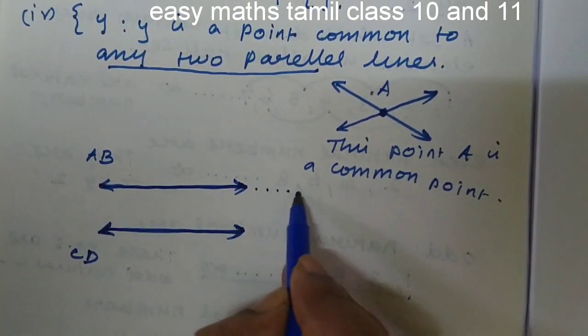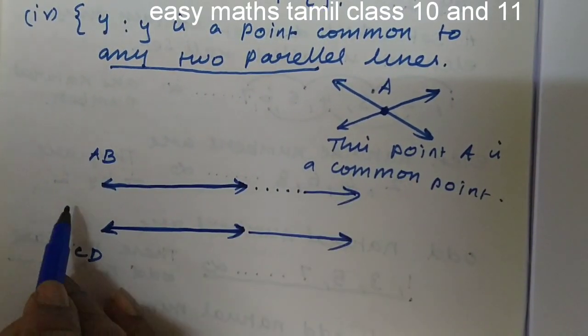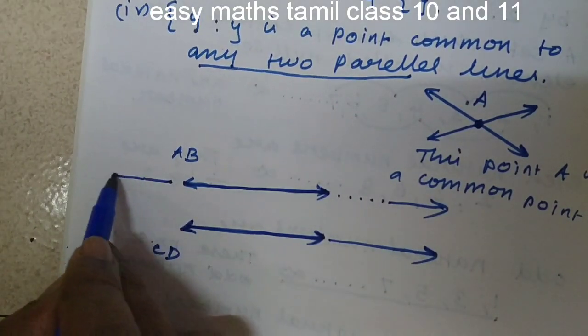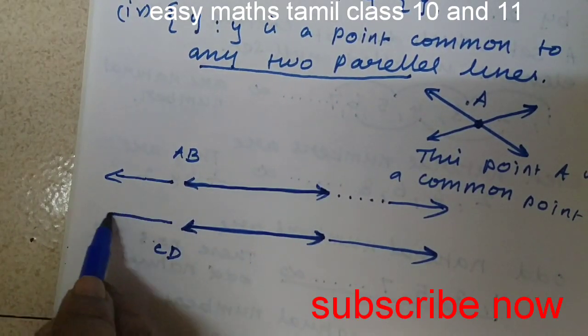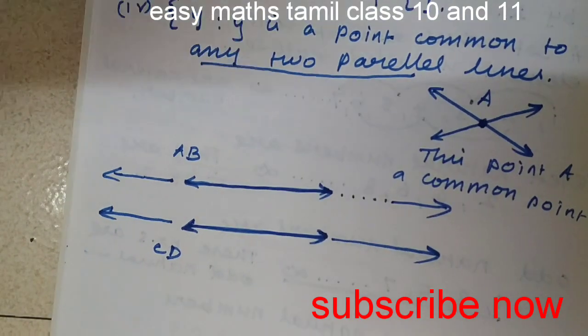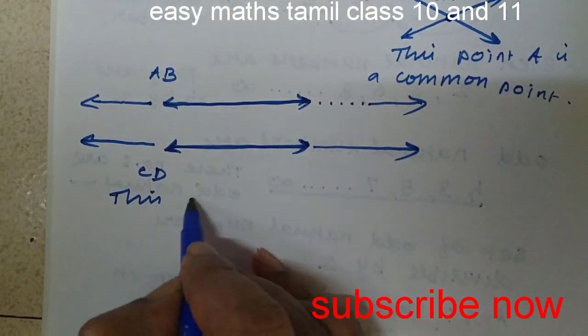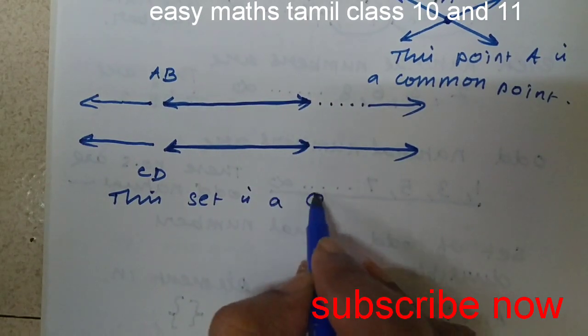Even if you extend the length of these lines, they never intersect or meet each other at any point. This set is a null set.